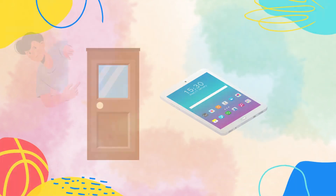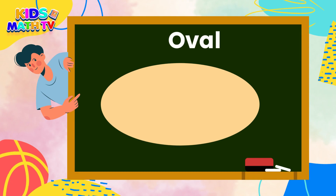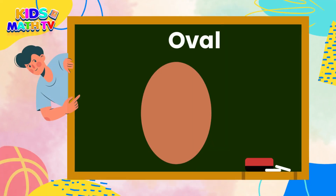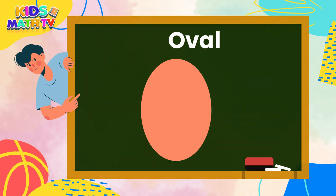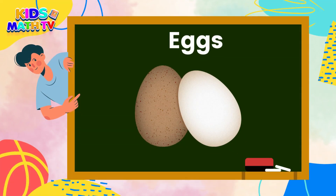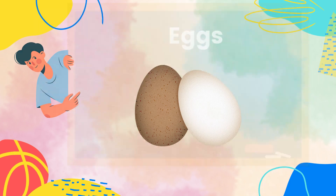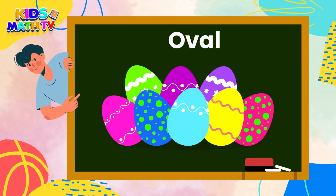Ovals are like stretched-out circles. They have no corners or edges, but they are not perfectly round. Some examples of ovals are eggs, leaves, or balloons. Ovals are also used in design and art to create curves and organic shapes.